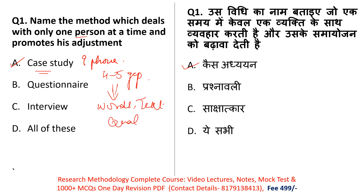Looking at the options: Option 1 is case study — correct. Questionnaire has sets of questions such as MCQ type or yes/no type questions — it is a quantitative research method gathering data on many topics at a time, so that option is not right. Option C, interview — you take an interview with experts, there is no group discussion; you gather data through interview. The answer is case study.